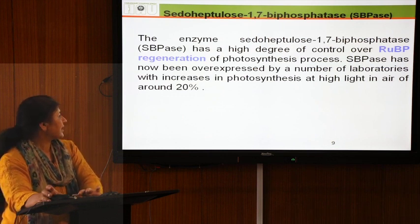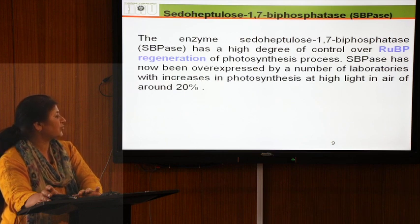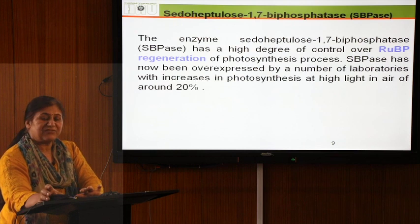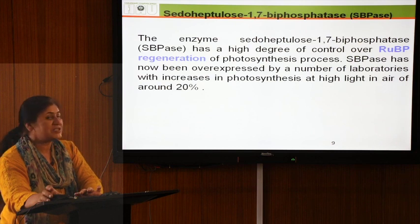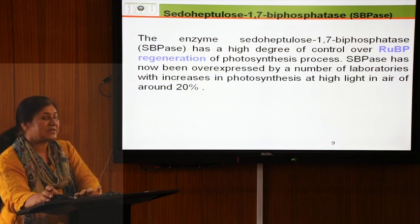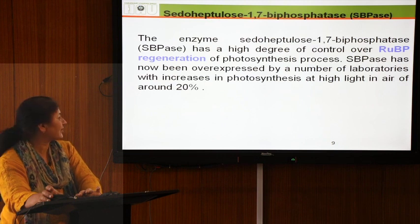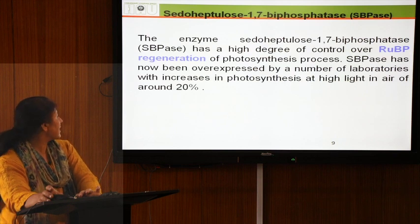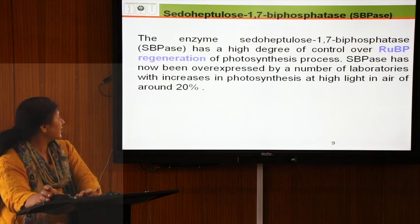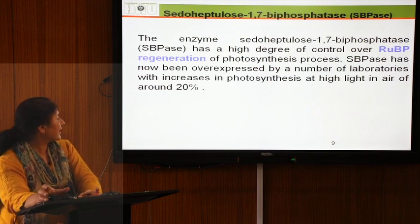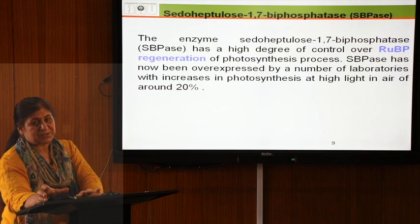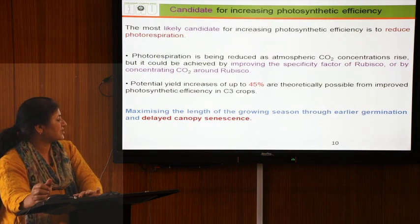In the Calvin cycle, other enzymes besides rubisco are also important. One key enzyme for enhancing the photosynthetic process is sedoheptulose-1,7-bisphosphatase (SBPase). This enzyme has a high degree of control over RuBP regeneration. When SBPase activity is high, it helps regenerate RuBP, which is required for completing the Calvin cycle.